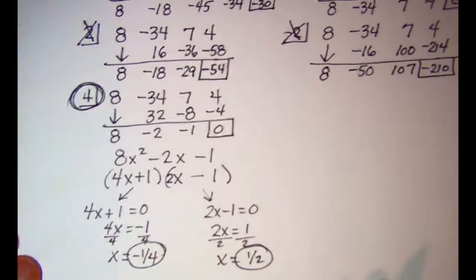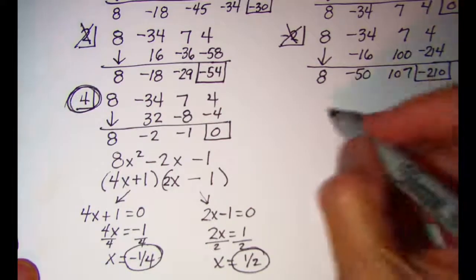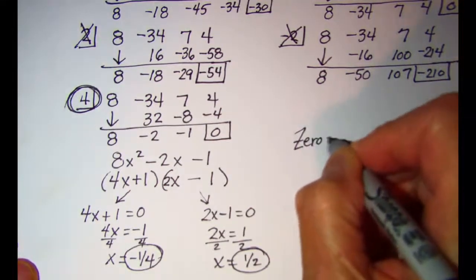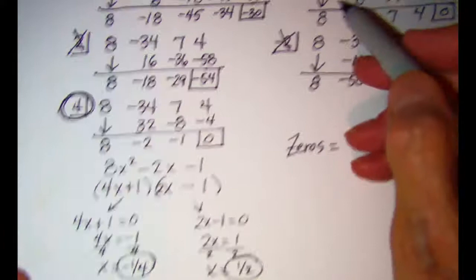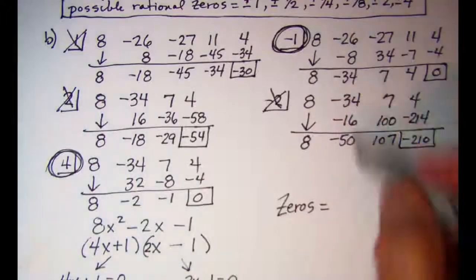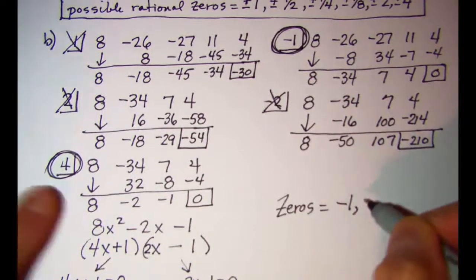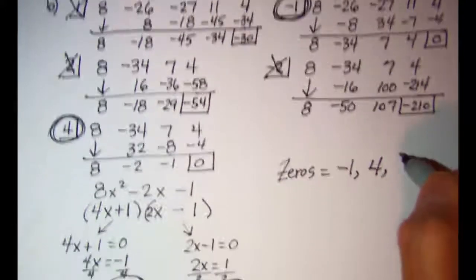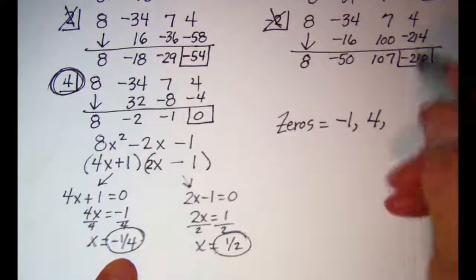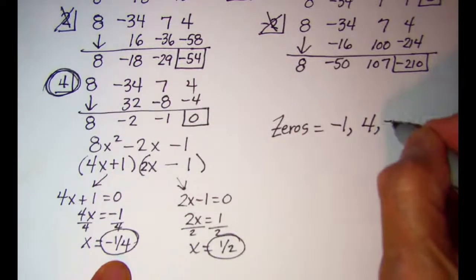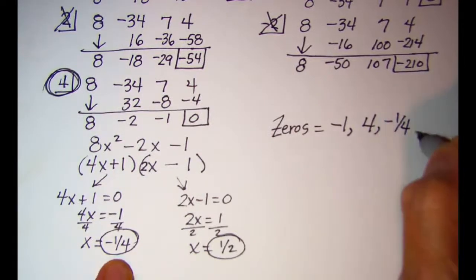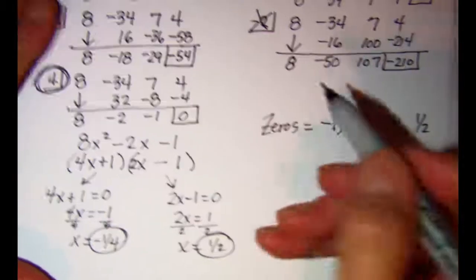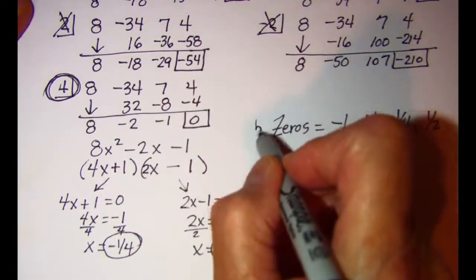So my zeros are -1, 4, -1/4, and 1/2. That's the answer to part b.